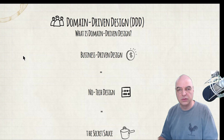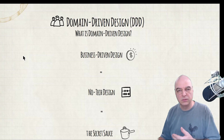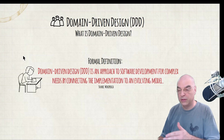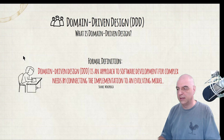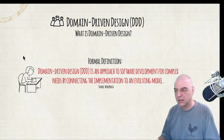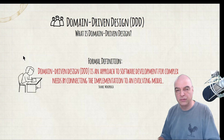Domain driven design is really a style to let you model the business, so you and everybody involved in a particular project speaks the same language the business would use. The formal definition from Wikipedia is: domain driven design is an approach to software development for complex needs by connecting the implementation to an evolving model.